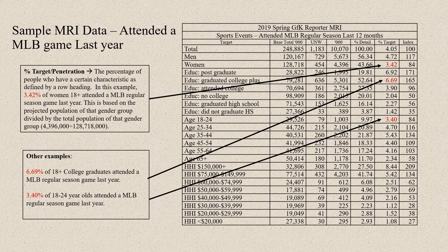The next column is called the percent target, or market penetration. This is the percentage of people who have a certain characteristic as defined by the row heading. In this example, 3.42% of women 18 and over attended a Major League Baseball regular season game last year. This calculation is done by dividing the total number in the zeros column — 4,396,000 — by the total number of women in the population, 128,718. That gives you the 3.42%.